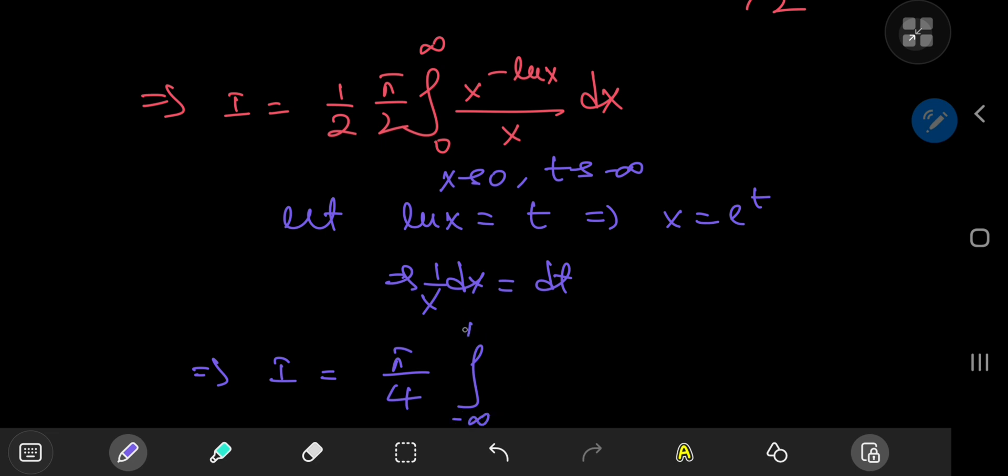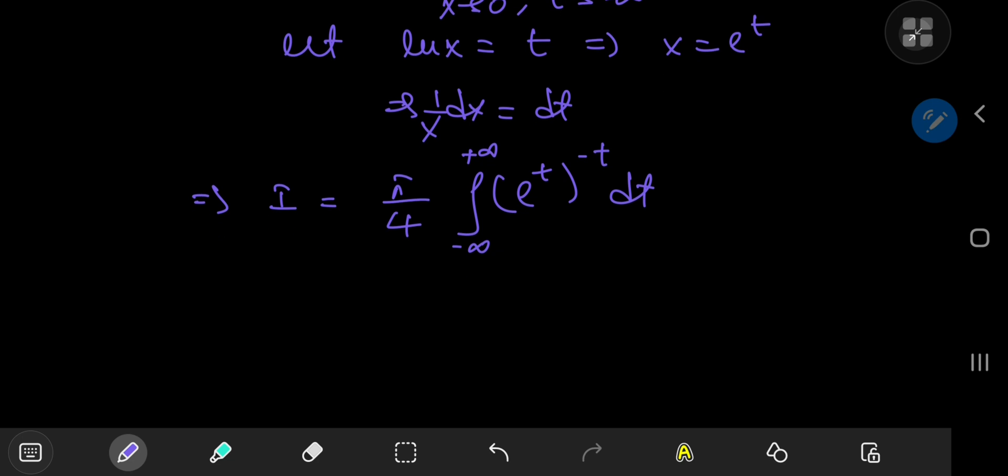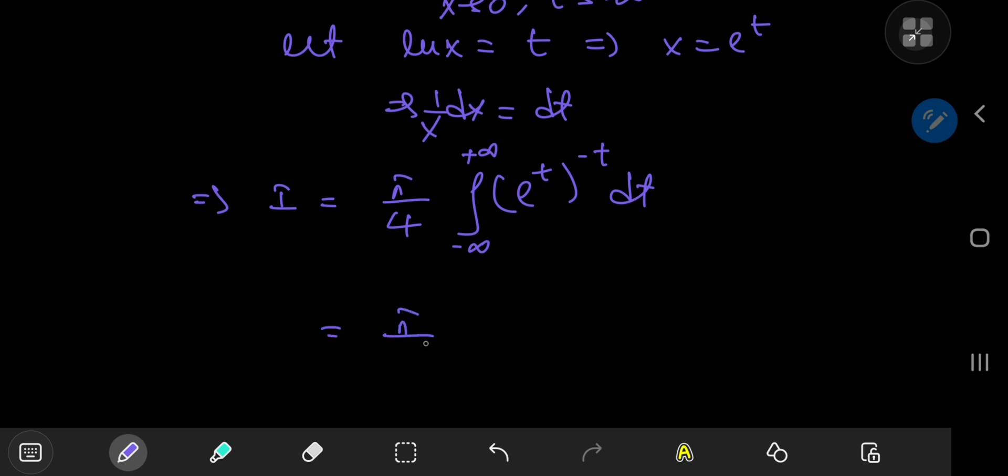So we have the integral from negative to positive infinity of e to the t to the negative log x. And negative log x is just negative t, right? And this 1 by x dx becomes the differential element. So we're left with pi by 4 times the integral from negative to positive infinity of e to the negative t squared dt.